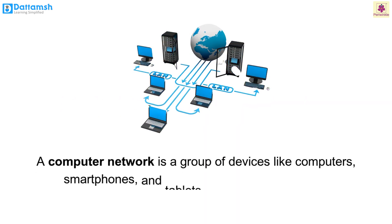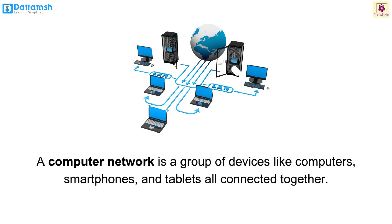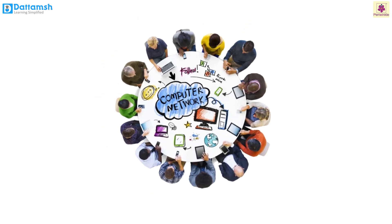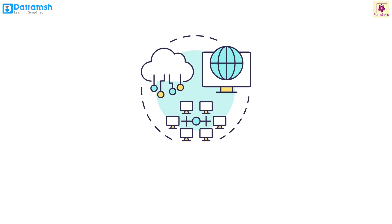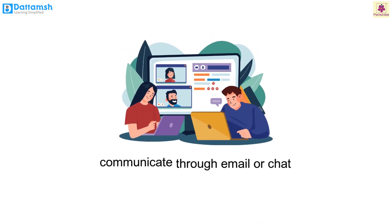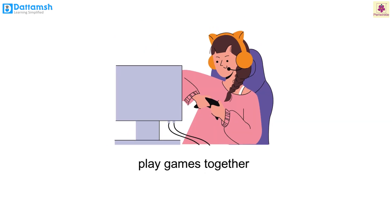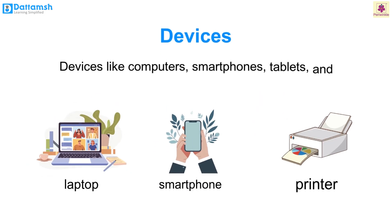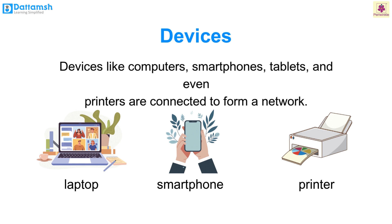A computer network is a group of devices like computers, smartphones and tablets, all connected together so they can share information and resources. Think of it like a group of friends who all share books, play games and chat together. With a network, these devices can share files, photos and videos, communicate through email or chat, access information, and play games together.